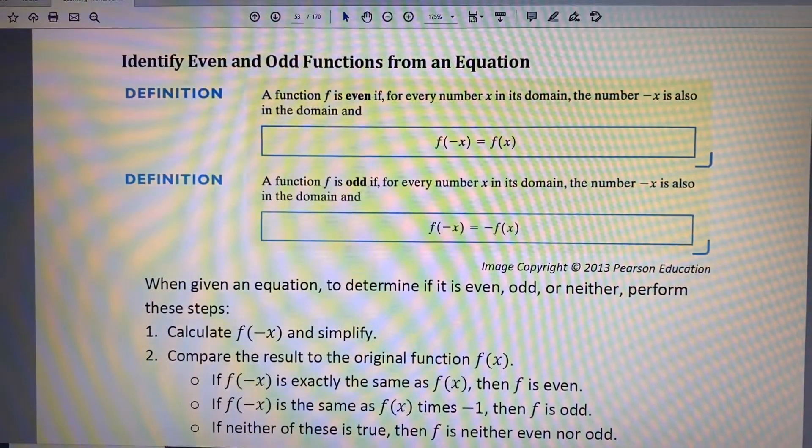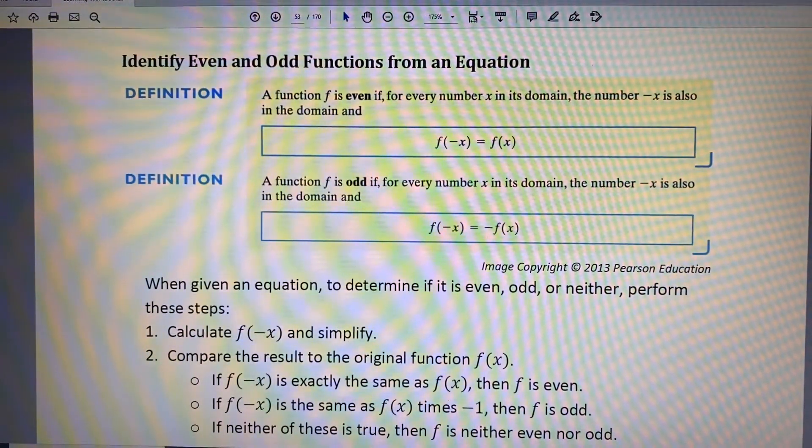Next, if f of negative x is the same as f of x times negative 1, then f is odd.